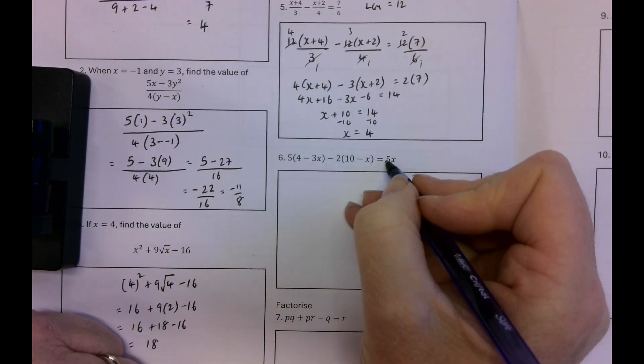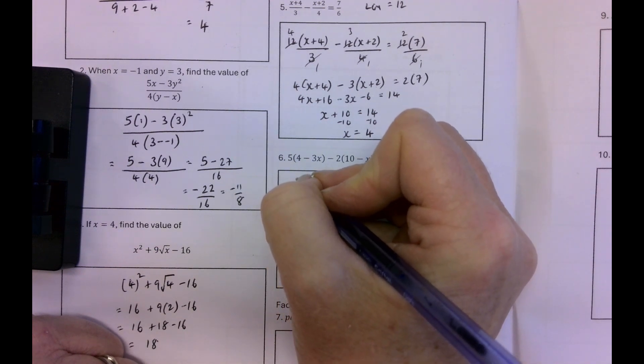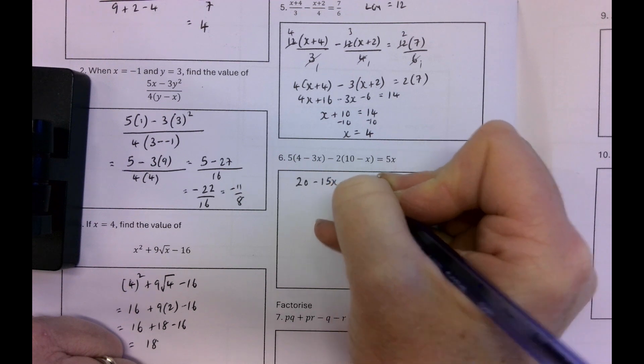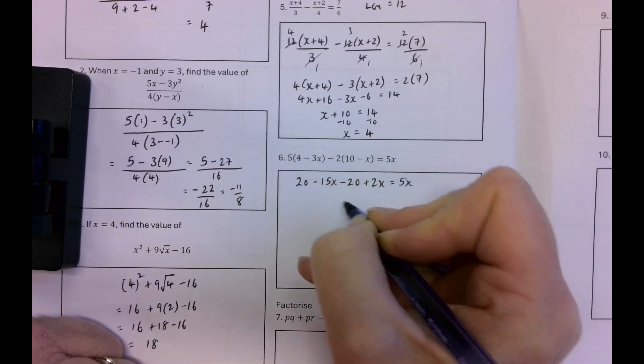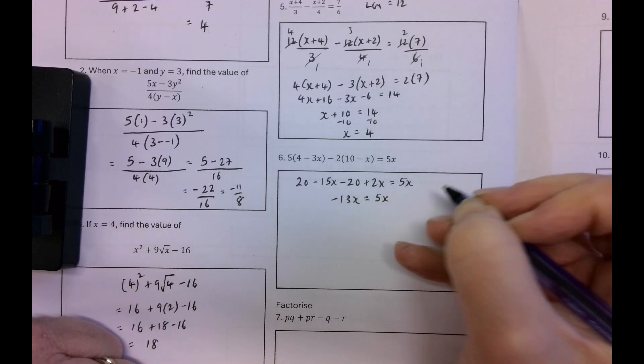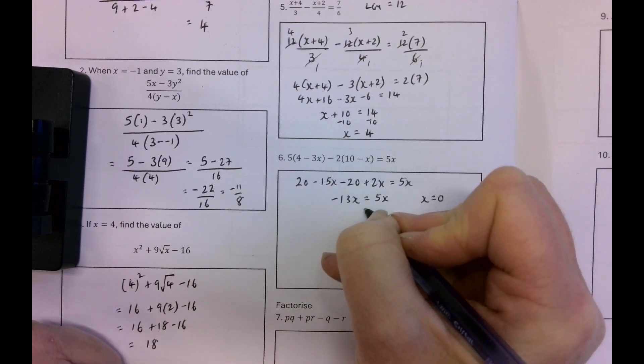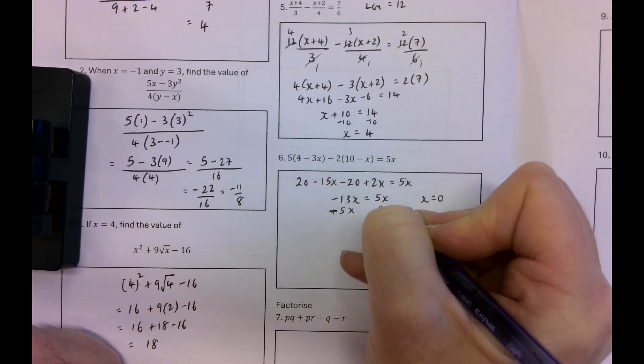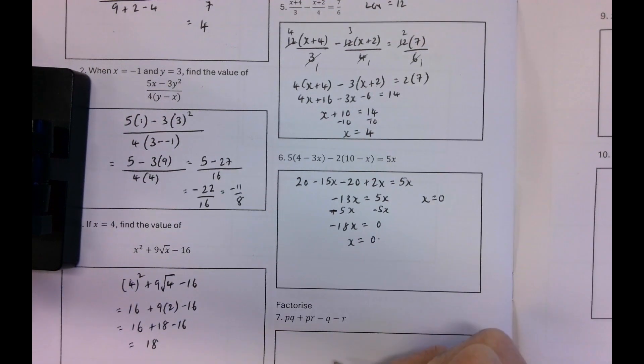5 brackets. So find the value of x. So I'm going to multiply out the brackets. 5 by 4 is 20 minus 15x minus 20 plus 2x is equal to 5x. So I've got minus 13x is equal to 5x. The only thing x can be there is 0. But let's just finish it off to show that. So plus 5x. So minus 5x minus 5x minus 18x equals 0. So x equals 0.